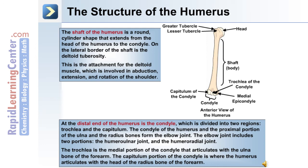The condyle of the humerus and the proximal portion of the ulna and radius bones form the elbow joint. The elbow joint includes two portions: the humeral ulnar joint and the humeral radial joint. The trochlea is the medial portion of the condyle that articulates with the ulna bone of the forearm. The capitulum portion of the condyle is where the humerus articulates with the head of the radius bone of the forearm.